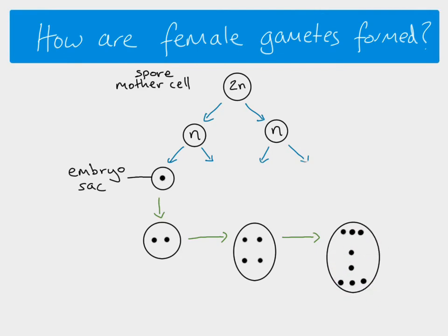Three of them move to one end, and three of them move to the other end. The two in the middle are called the polar nuclei. Those polar nuclei will then fuse together.